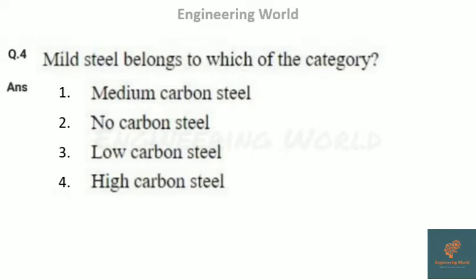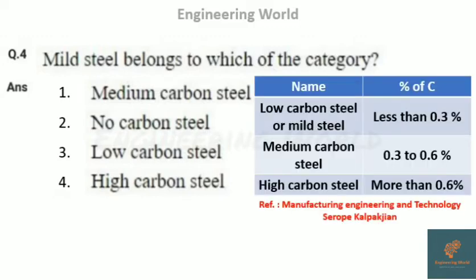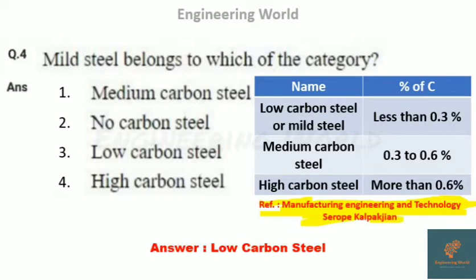The next question: mild steel belongs to which category? Options are medium carbon steel, no carbon steel, low carbon steel, and high carbon steel. Steel is categorized into three parts based on carbon content. Low carbon steel or mild steel contains less than 0.3% carbon; medium carbon steel contains 0.3 to 0.6% carbon; and high carbon steel contains more than 0.6% carbon. The answer is low carbon steel.